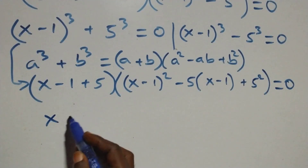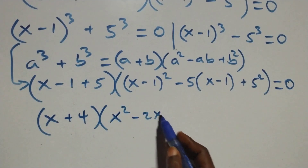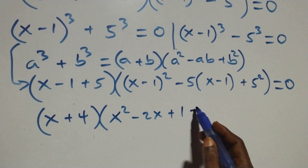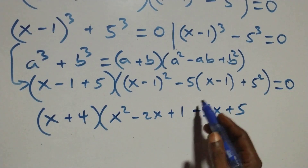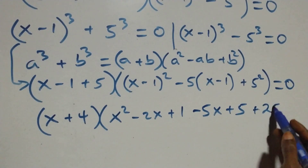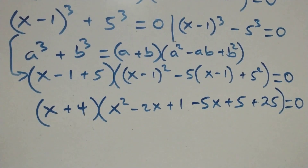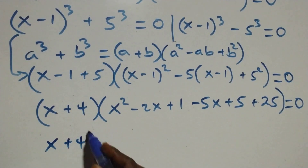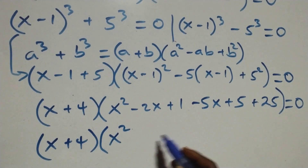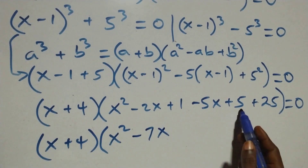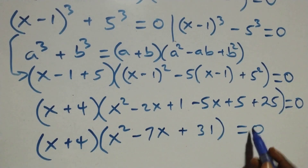This gives us (x+4) times [x² − 2x + 1 − 5(x−1) + 25] equals to 0. Expanding: x² − 2x − 5x gives minus 7x, and 5 + 25 + 1 gives 31. So we get (x+4)(x² − 7x + 31) equals to 0.